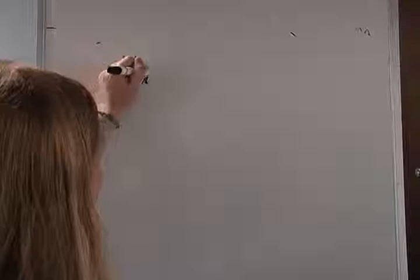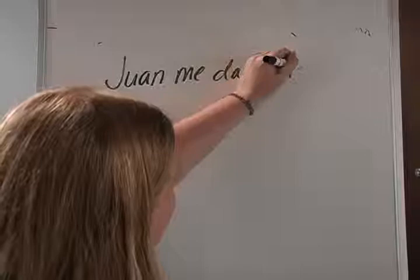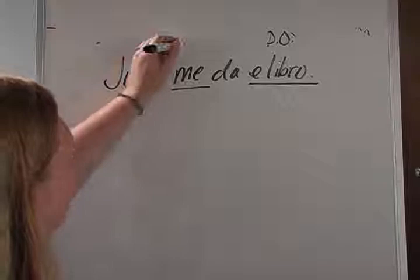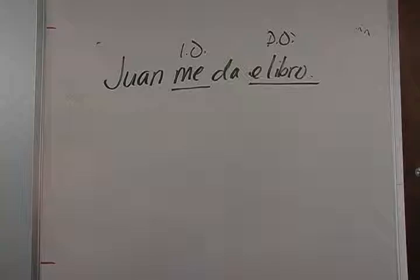Let's look at some examples in Spanish. The first ones we're going to look at have two pronouns in the same sentence. For example, Juan me da el libro. What does Juan give me? Juan gives me el libro — so this is your direct. Who does he give it to? He gives it to me — this is your indirect. We need to rewrite this sentence using our object pronouns.